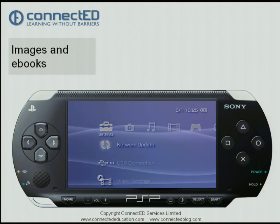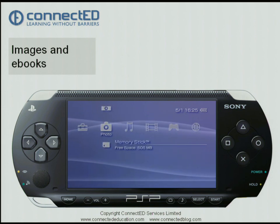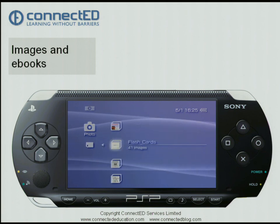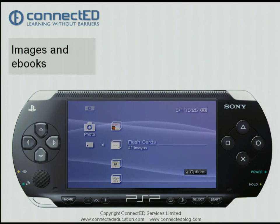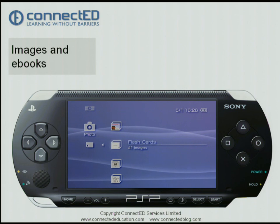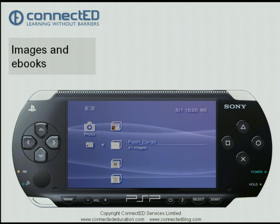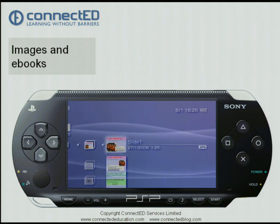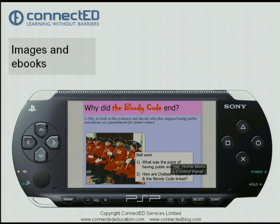Let's have a look at some images and e-books. I'm going to go across to the photo section and go down to the memory stick and select it. The simplest way to get e-books onto the PlayStation Portable is to save PowerPoints as JPEGs — in PowerPoint you go File, Save As, and JPEGs. This is an example of some students' work where they created the PowerPoints themselves.